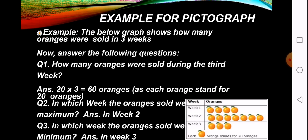In which week were the oranges sold maximum? See the picture carefully. Maximum oranges were sold in week 2. In which week were the oranges sold minimum? See the picture again. In week 3, the oranges were sold minimum. It means with the help of the picture we can identify the answers.